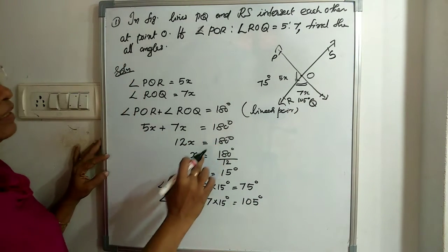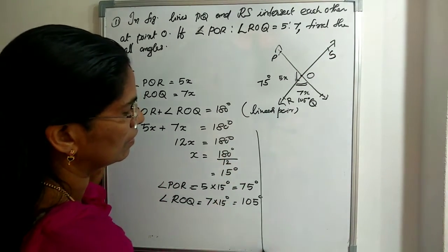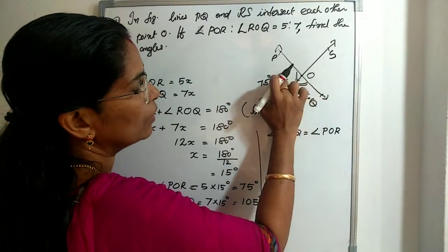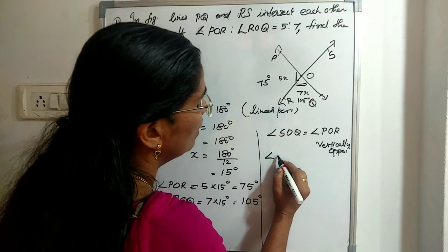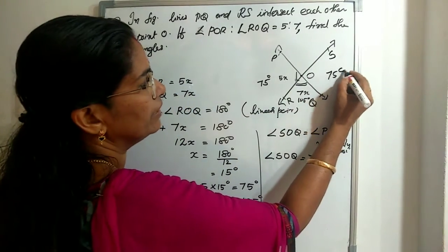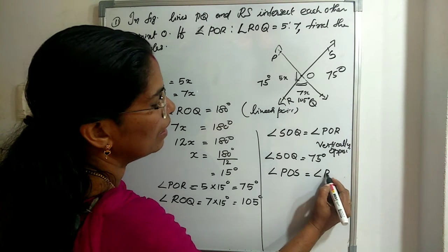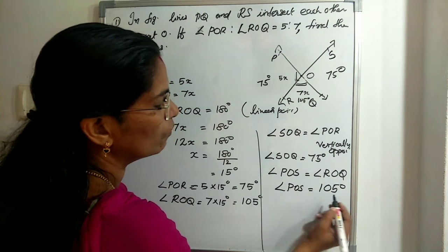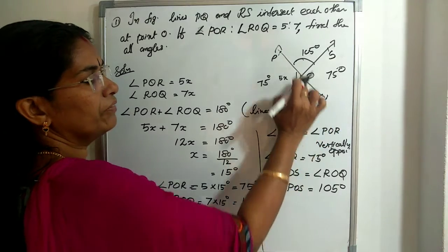Now we need to find all angles. From the figure, angle SOQ and angle POR are vertically opposite angles, so angle SOQ equals angle POR equals 75 degrees. Similarly, angle POS and angle ROQ are vertically opposite angles, so angle POS equals angle ROQ equals 105 degrees. So all four angles are: 75, 105, 75, and 105 degrees.